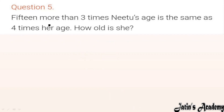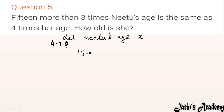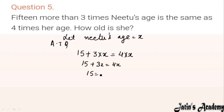Question 5: 15 more than 3 times Nitu's age is the same as 4 times her age. Let Nitu's age be x years. So 15 plus 3x equals 4x. Moving 3x to the right: 15 equals 4x minus 3x, giving 15 equals x. So Nitu's age is 15 years.